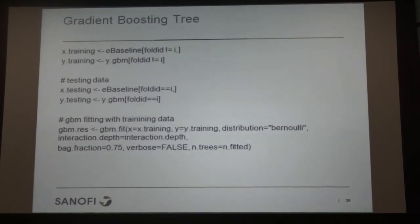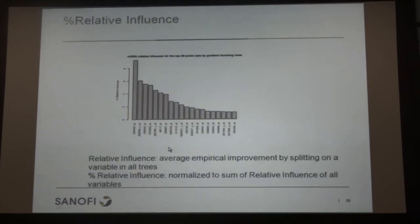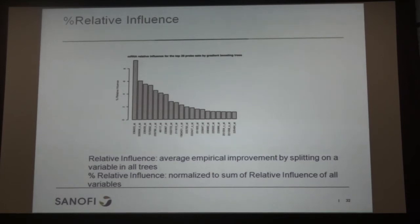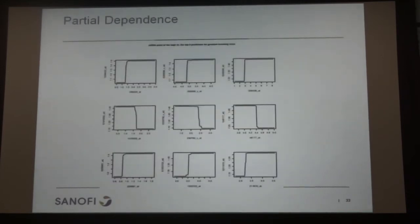You can see the code includes all these parameters. We summarize variable importance using percentage relative influence, and we can check the partial dependence between the outcome and each selected variable.